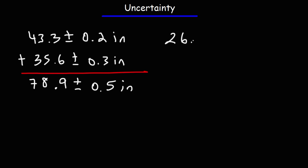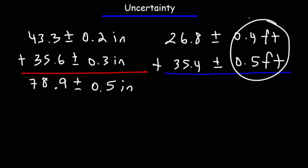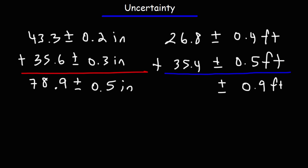Let's try another example. We have 26.8 plus or minus 0.4 feet, and 35.4 plus or minus 0.5 feet. Let's begin by adding the uncertainties: 0.4 plus 0.5 is 0.9. Then 26.8 plus 35.4: 8 and 4 is 12, write the 2 and carry the 1; 1 plus 6 is 7 plus 5 is 12, write the 2 carry the 1; 1 plus 2 is 3 plus 3 is 6. So the answer is 62.2 plus or minus 0.9 feet.